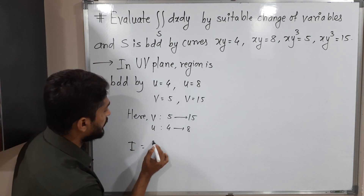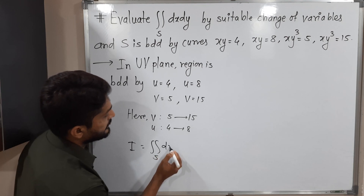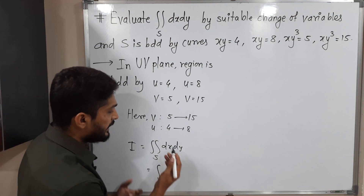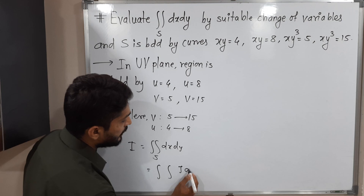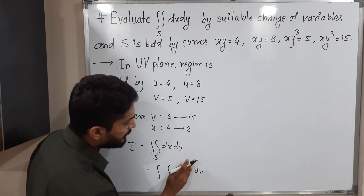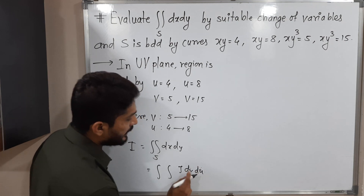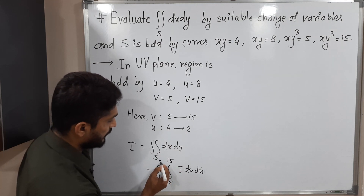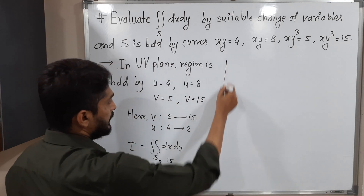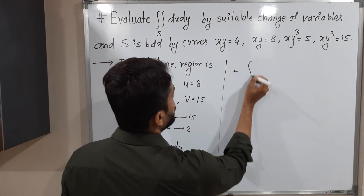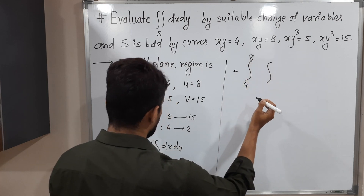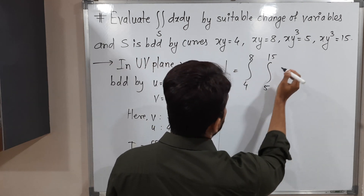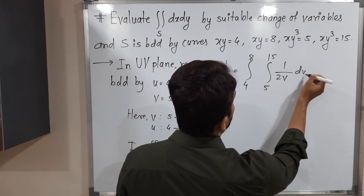So the double integration over S dx dy, converted in terms of u and v, becomes: integration from 4 to 8 (outer, with respect to u), integration from 5 to 15 (inner, with respect to v), of J dv du. Since there is no function in the integrand and J = 1/(2v), the integral is the double integration of 1/(2v) dv du with u from 4 to 8 and v from 5 to 15.